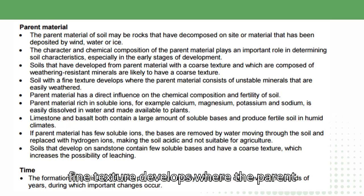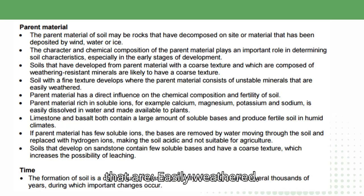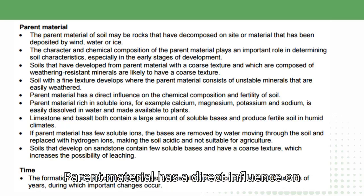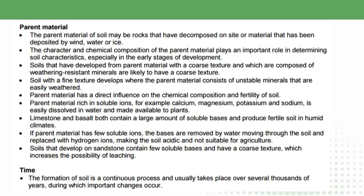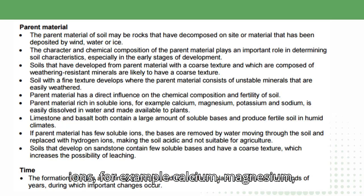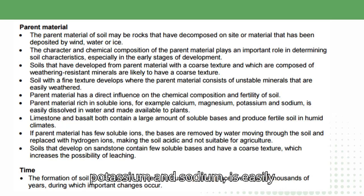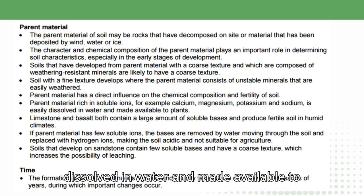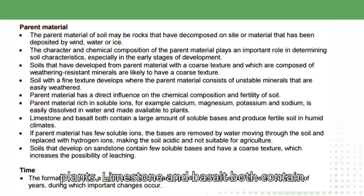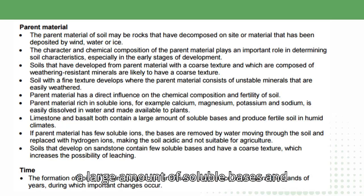Soil with a fine texture develops where the parent material consists of unstable minerals that are easily weathered. Parent material has a direct influence on the chemical composition and fertility of soil. Parent material rich in soluble ions, for example calcium, magnesium, potassium, and sodium, is easily dissolved in water and made available to plants. Limestone and basalt both contain a large amount of soluble bases and produce fertile soil in humid climates.